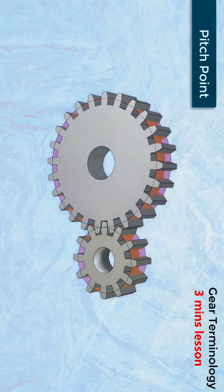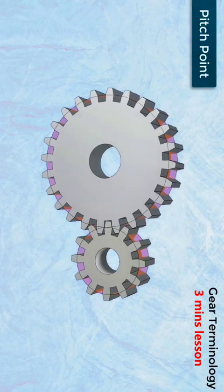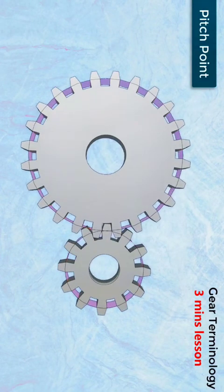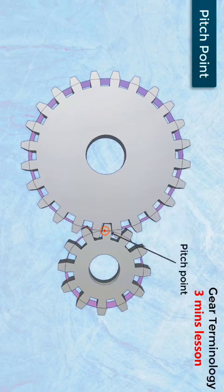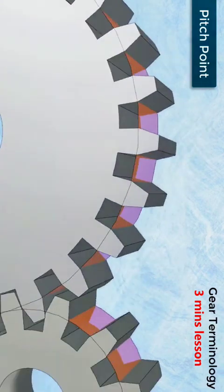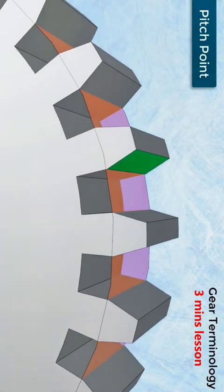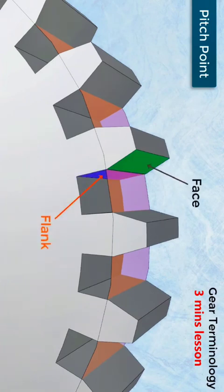Pitch point. When the two gears are in contact, the common point of both pitch circles of the meshing gears is called the pitch point. The surface of the tooth above the pitch circle is called the face of the tooth. The surface of the tooth below the pitch circle is called the flank of the tooth.